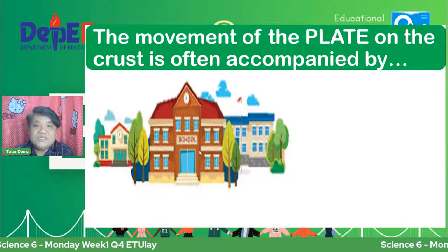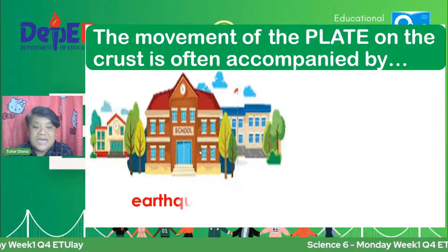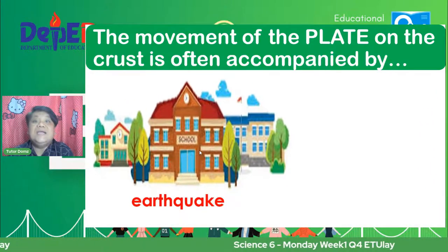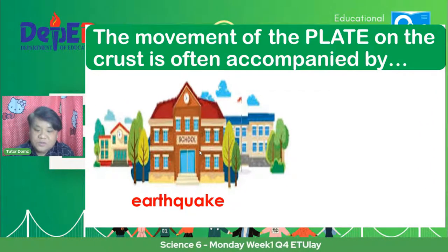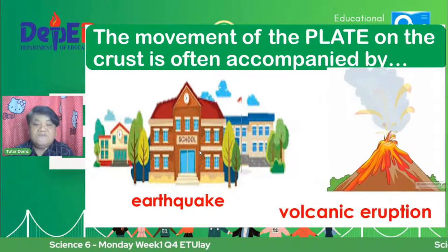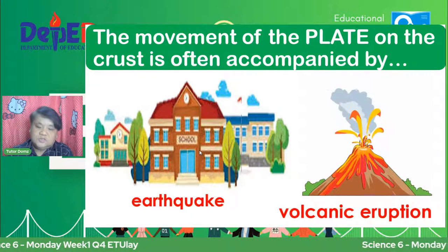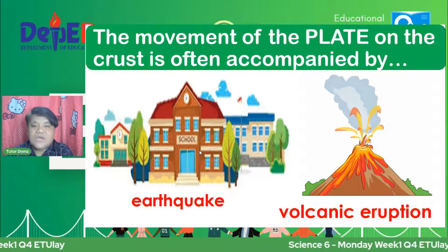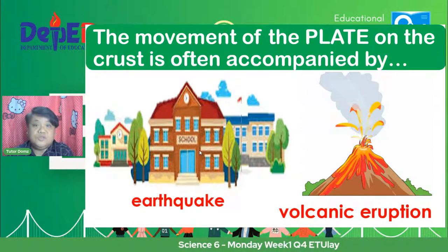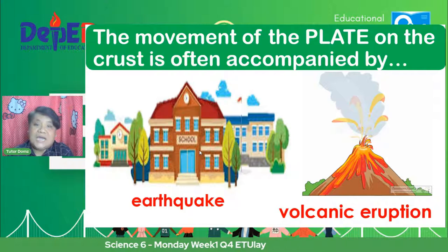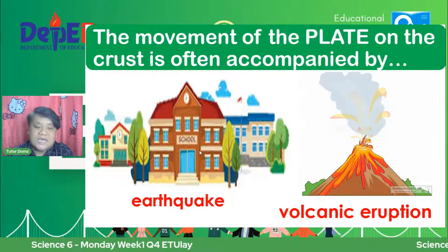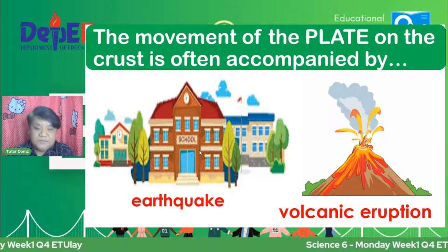Now we will move on to the movement. Bakit nga ba nagmove yung plate na yun? Kapag nagmove siya, meron siyang kasama. Pag nagmove yung plate na yun, nagkakaroon tayo ng tinatawag na earthquake. Aside from the earthquake, nagkakaroon din ng tinatawag na volcanic eruption. Napakahalaga na huwag gumagalaw ang plate natin kasi dalawang klase kagad ang nagre-result niyan — either earthquake or volcanic eruption.